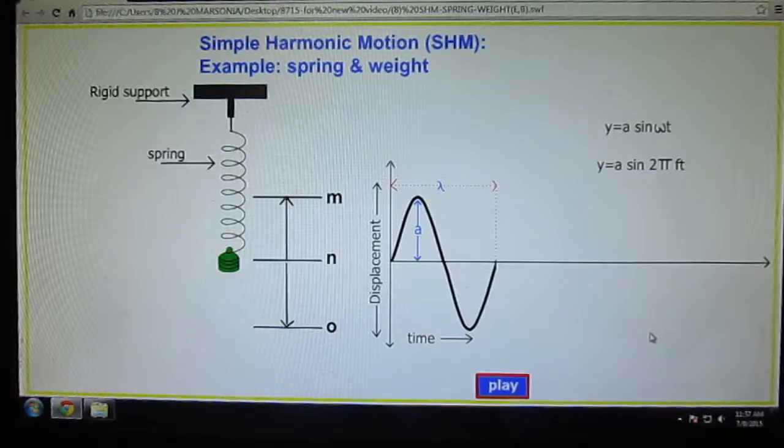The graph of time on the x-axis against the displacement on the y-axis is shown. Let us see how oscillations are generated in graph form. Here lambda is wavelength, here is displacement in upward direction.